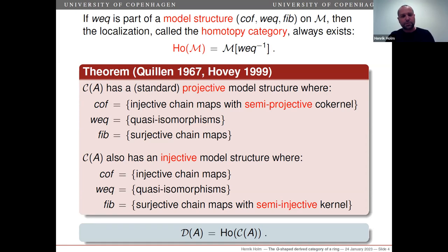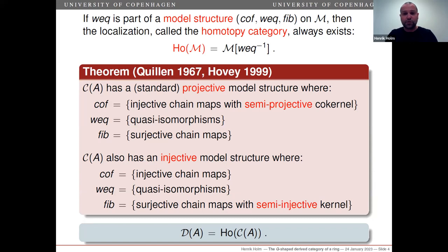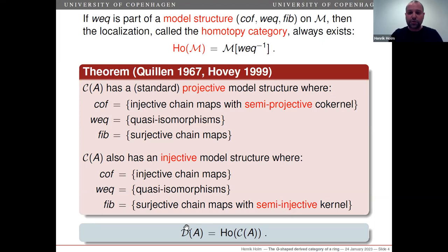Back to complexes. The category C of A of complexes of A-modules has two classical model structures: one called the projective or standard model structure, the other called the injective model structure. These two model structures are compatible because they have the same weak equivalences — in both cases, the weak equivalences are the quasi-isomorphisms. Therefore these two model structures have the same homotopy category. In the projective model structure, the fibrations are all surjective chain maps, but the cofibrations are only certain injective chain maps — they must be injective chain maps with a so-called semi-projective cokernel. Dually, in the injective model structure, the cofibrations are all injective chain maps, and the fibrations are surjective chain maps with a semi-injective kernel. The derived category is the homotopy category of either of these model categories.